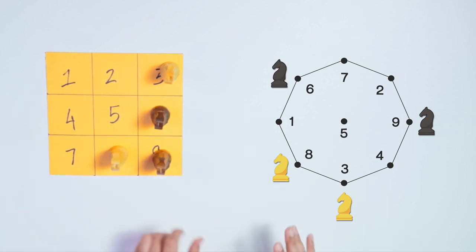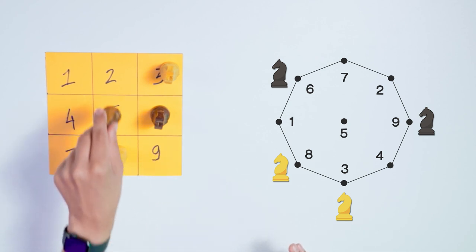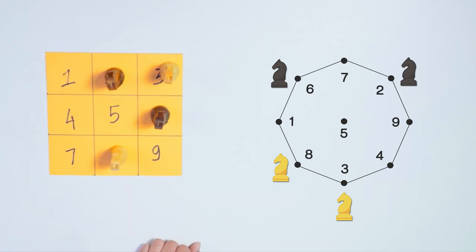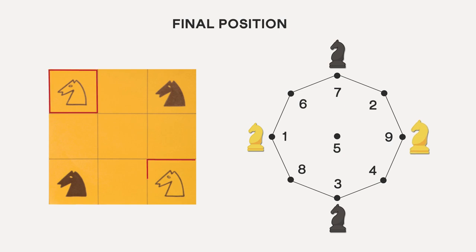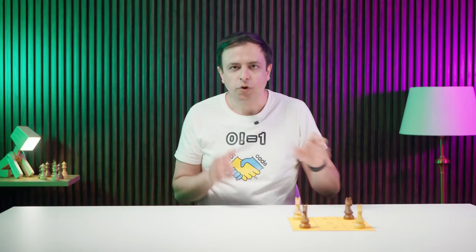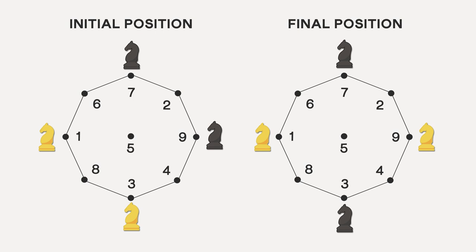And similarly, any knight move on the grid is the same as moving it from one point on the graph to another connected point. So instead of moving the knights on the grid, we can do it directly on the graph. It's the same thing. Let's now also see what the final positions on the graph would look like. Whites on 1 and 9, and blacks on 3 and 7. So we can now forget the grids and simply use the graphs to get from the initial to the final state.